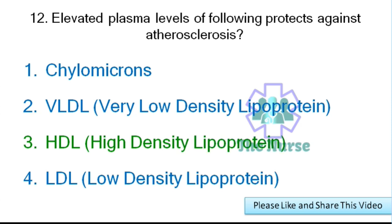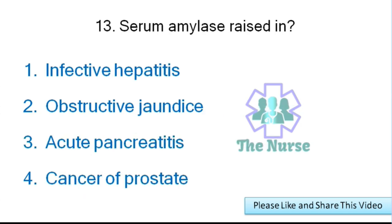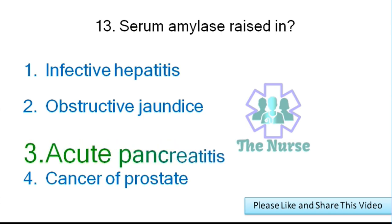Next question: Serum amylase is raised in which condition? Options: infective hepatitis, obstructive jaundice, acute pancreatitis, or cancer of prostate. Correct answer: acute pancreatitis.